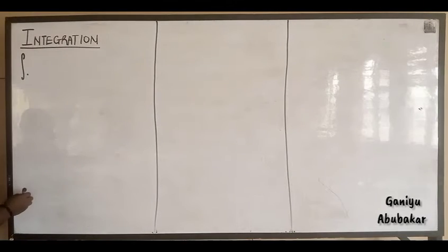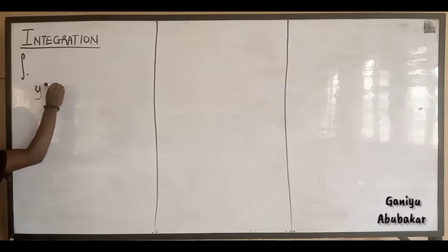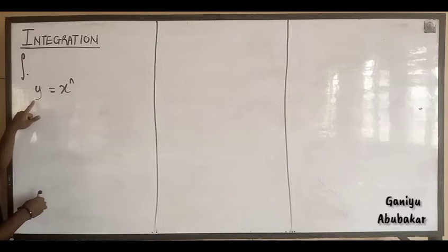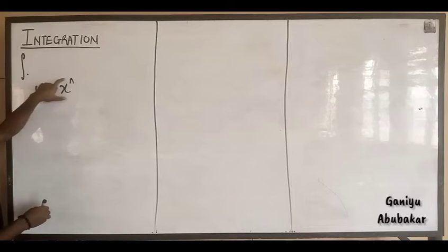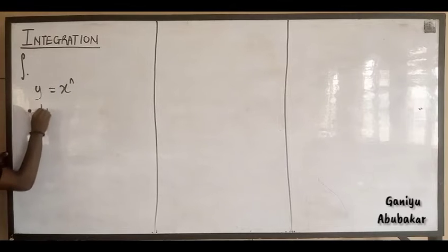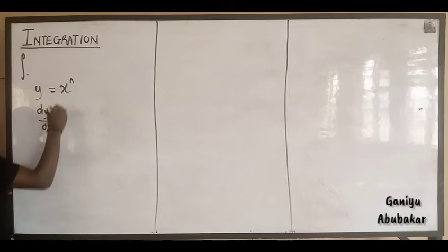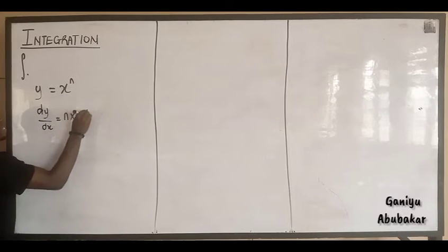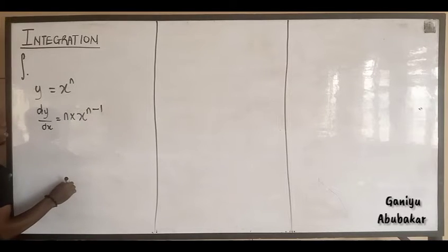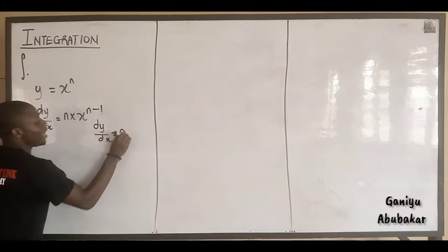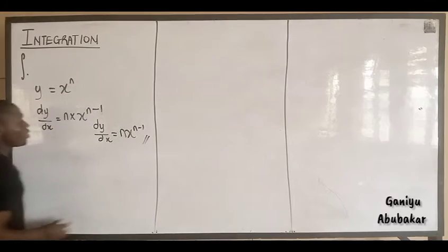Recall, we said that when it comes to differentiation, if we are given y equal to x to the power n, we said the rule was to multiply by the power. So dy/dx becomes n times x to the power n minus 1. This is the differentiation rule.